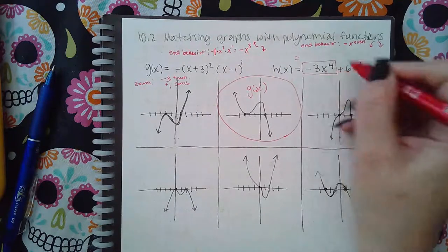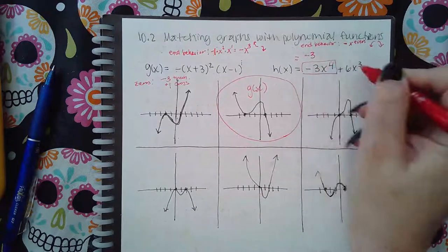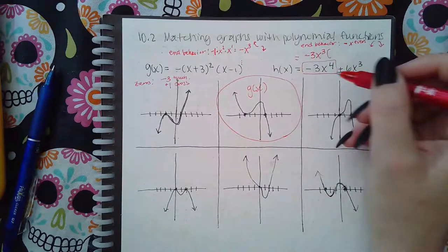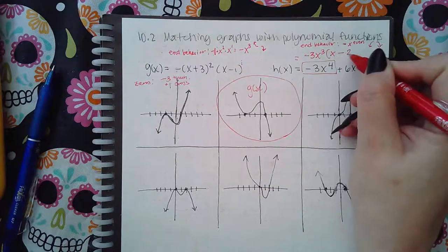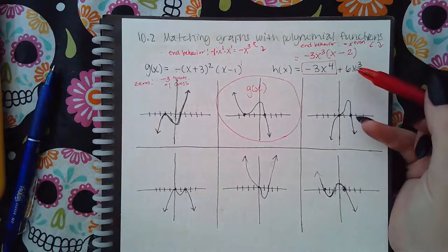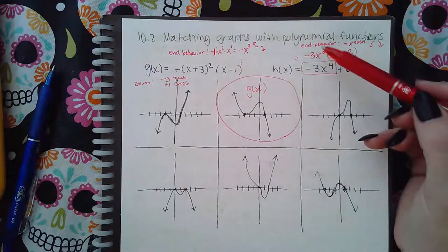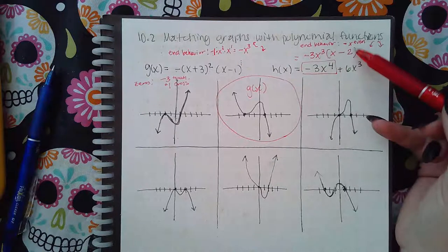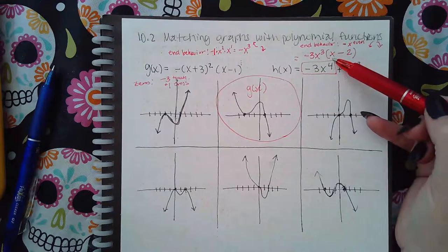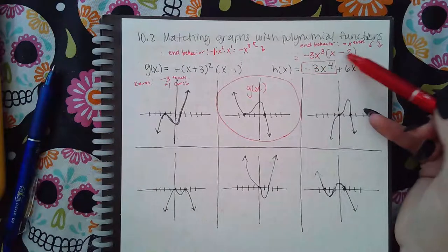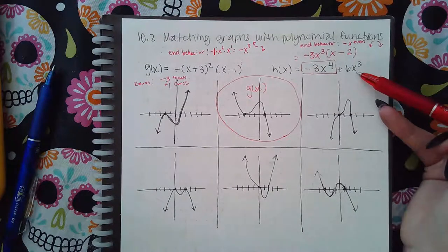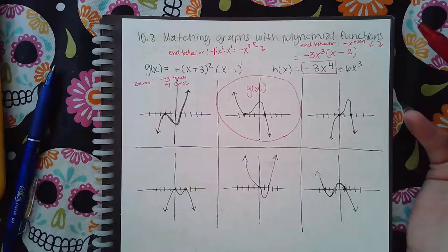So I can factor out a negative 3x cubed. And when I do that, I will get a positive x and then a negative two. And if you're not sure if you factored it out correctly, just distribute it back. Negative 3x to the third times x is negative 3x to the fourth. Negative 3x cubed times negative two is positive 6x cubed. So we did factor it correctly.